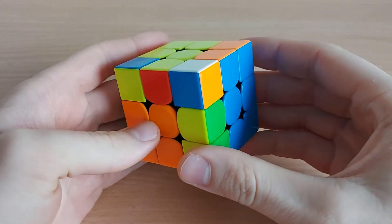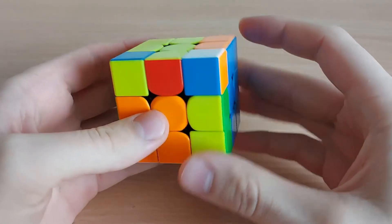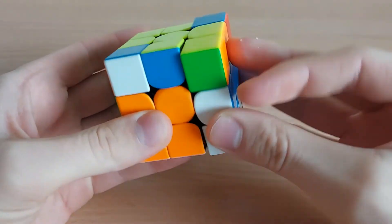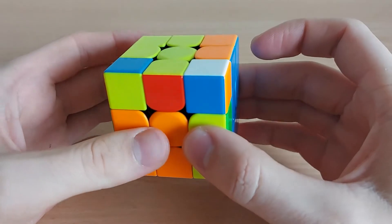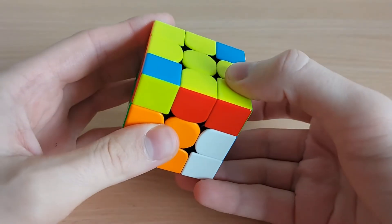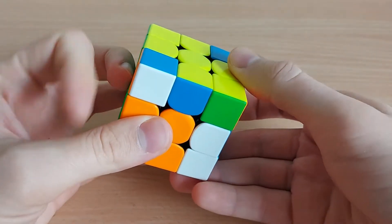For example, for this F2L case, instead of re-gripping and doing R U2 R' with your right hand, what you can do is from home grip, you do R U2 with your left hand, R'.